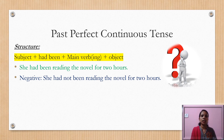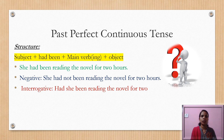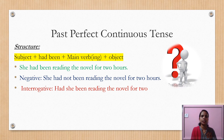Writing 'she had been not' would be wrong. Always remember: whenever there are two parts in the helping verb, place 'not' in between them. For interrogative sentences, bring the helping verb forward and start with 'had': 'Had she been reading the novel for two hours?'